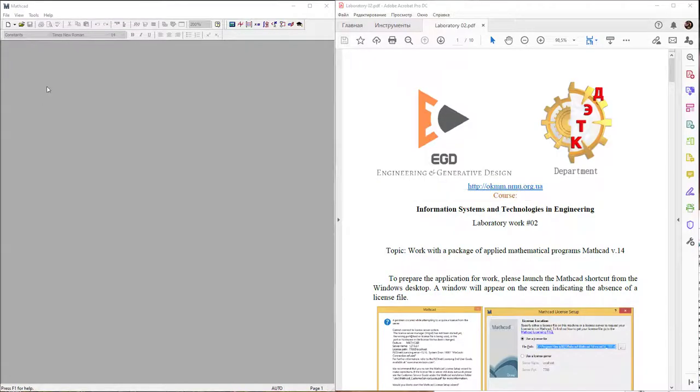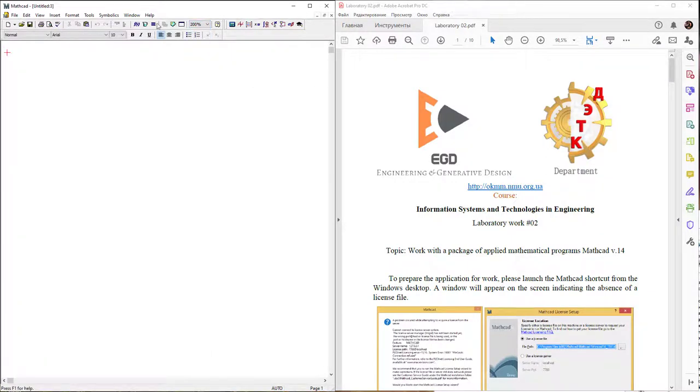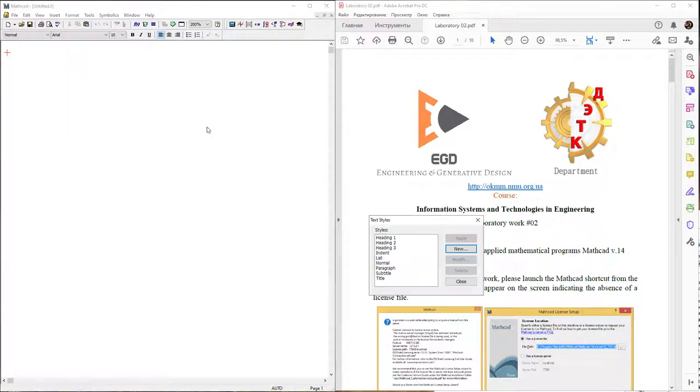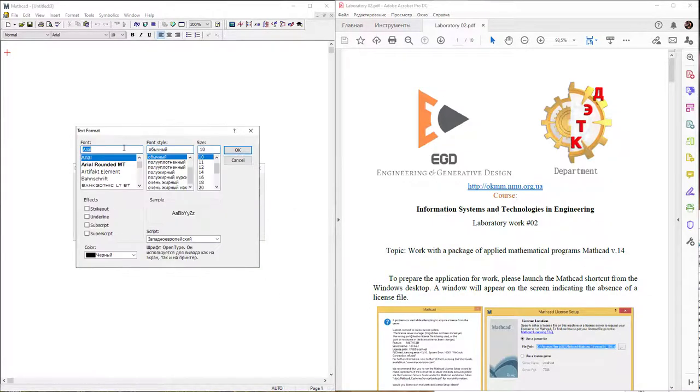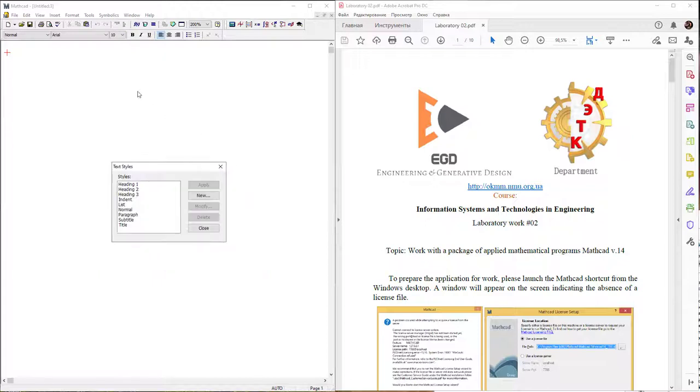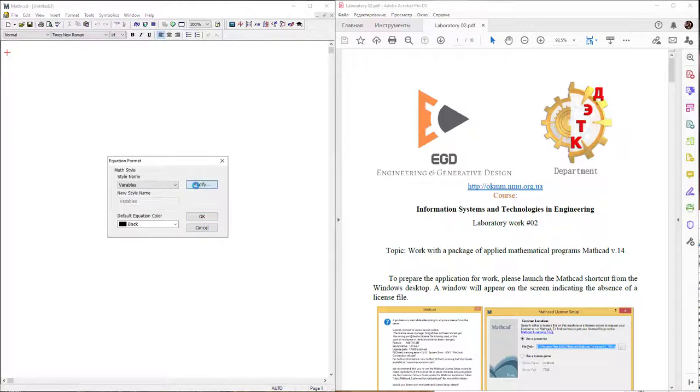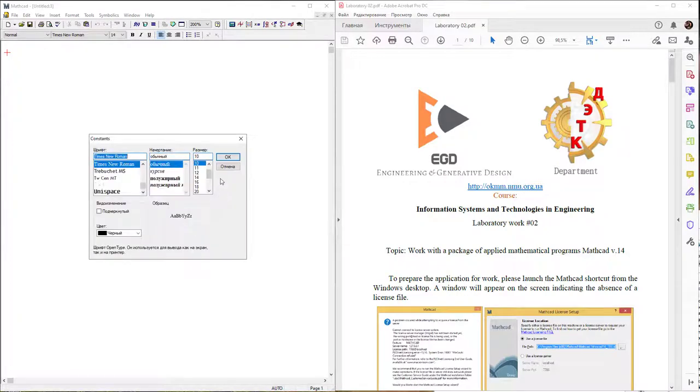Laboratory work 02 in MathCAD: Create a new document in MathCAD and change the document size by twice. Use format to change the normal style by font Times New Roman and change the size to 14, then change variable font size and constant size.